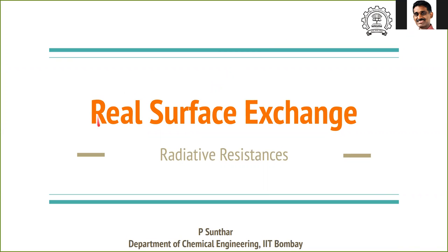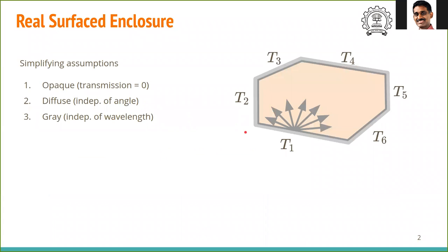In this video, we will see radiation exchange between real surfaces. In particular, we will define what are known as radiative resistances — useful quantities for computing the exchange between real surfaces. The surfaces we are considering are real surfaces in an enclosure, not open surfaces in general.